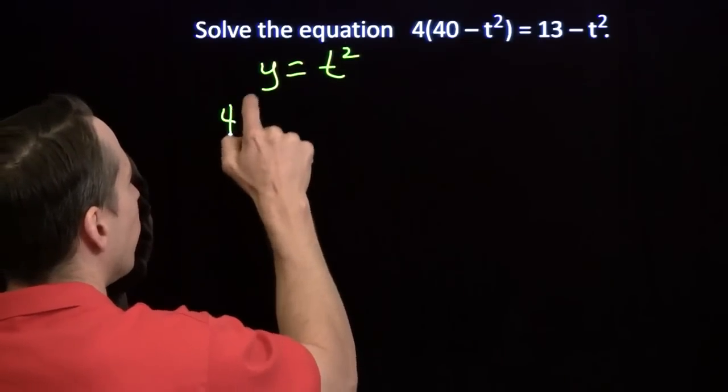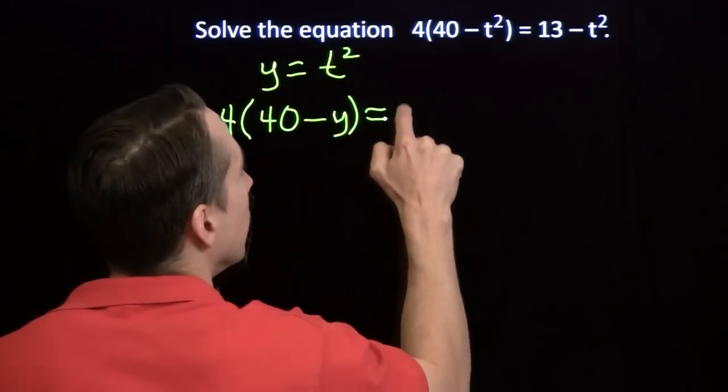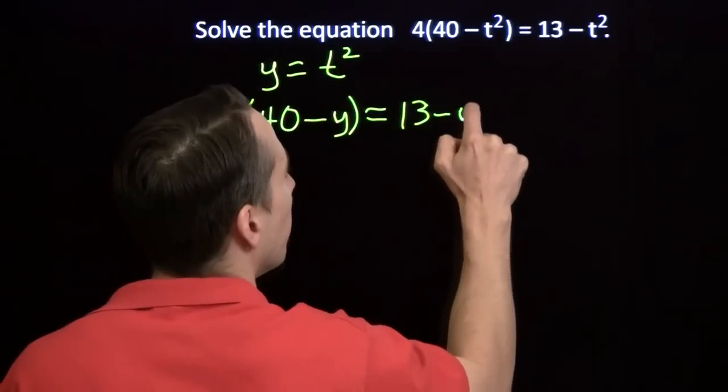We'll assign a variable to the scary thing. And now we can write the equation as just 4 times 40 minus y equals 13 minus y.